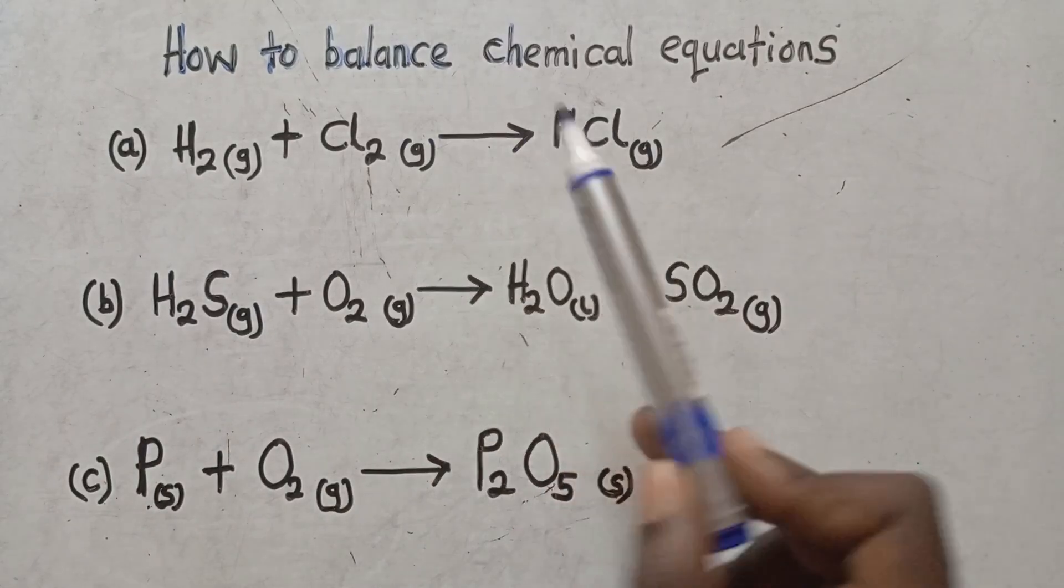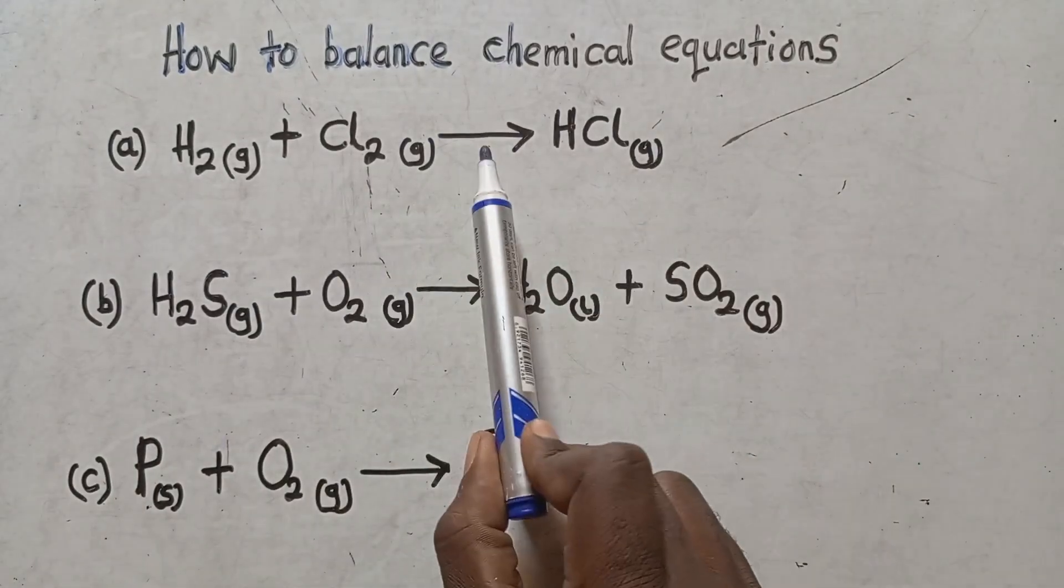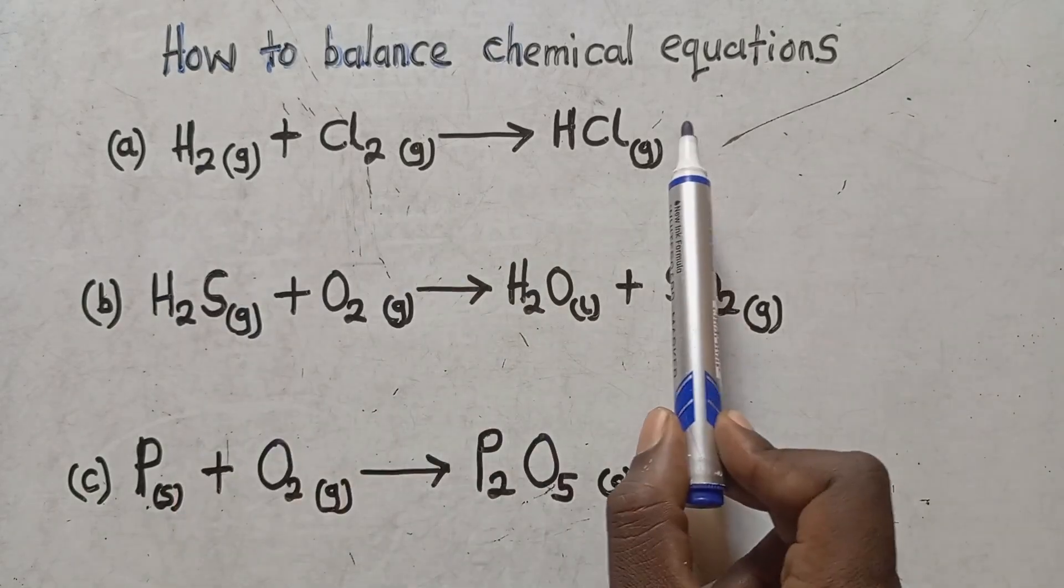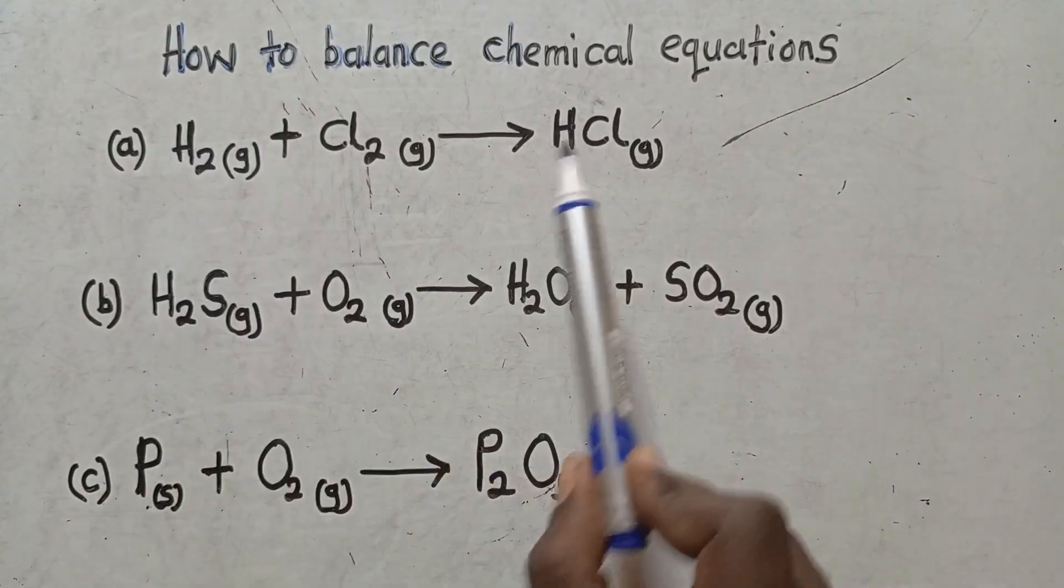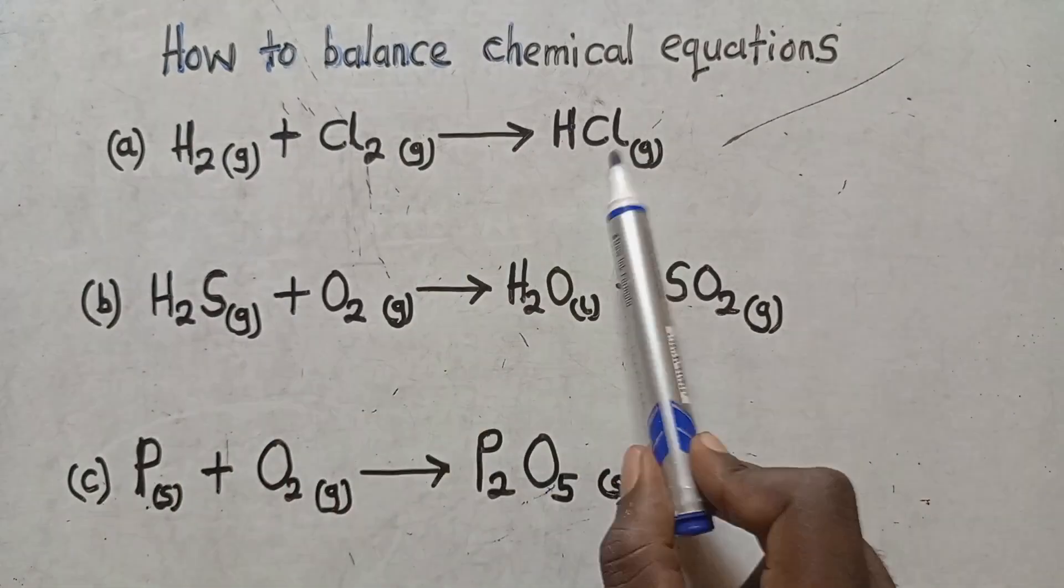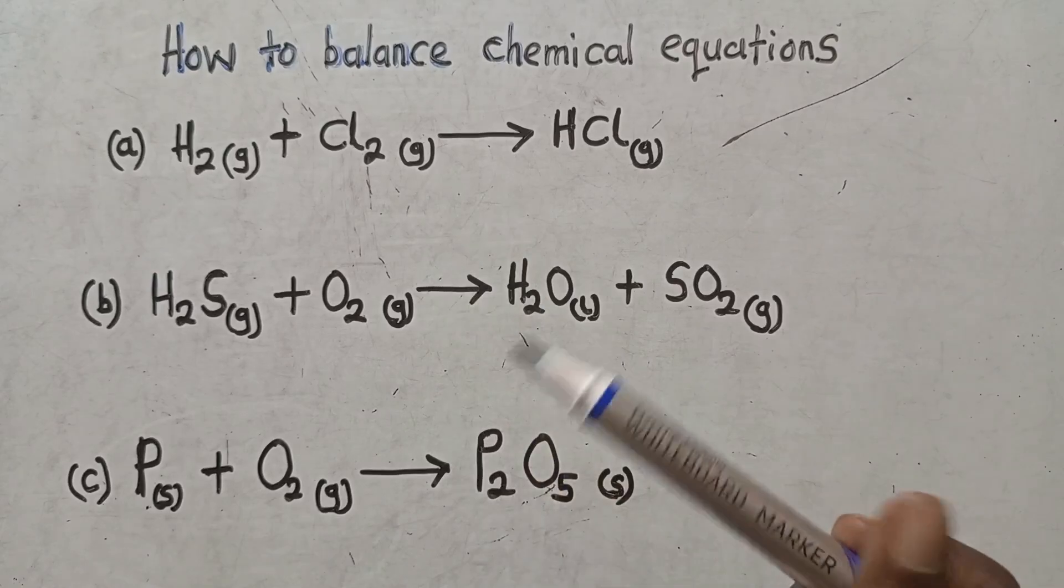So when I say this other side, what is separating the two is this arrow. I've got my left hand side, right hand side. So this side I've got two, this side I've got one. Chlorine this side two, this side one.